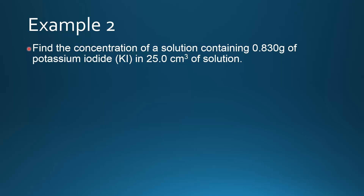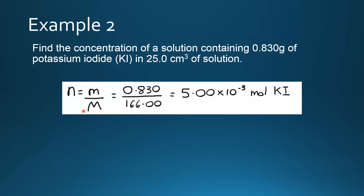Let's try another example. Find the concentration of a solution containing 0.830 grams of potassium iodide in 25.0 centimeters cubed of solution. First we change from grams to moles using number of moles equals mass divided by molar mass. The mass is 0.830 and the molar mass of potassium iodide is 166.00, giving 5.00 times 10 to the negative 3 moles of KI.